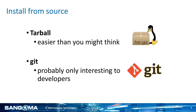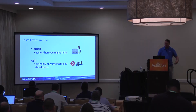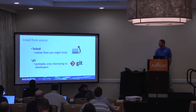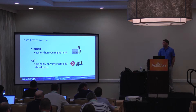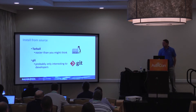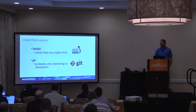To install from source, you can go out and grab a tarball off the Asterisk.org website. A tarball is essentially like a zip file in the Windows world — it's the way you compress everything together and then uncompress it. You could also use Git to get the latest and greatest from the Git repository, which is what the developers use for source code control. That's probably only interesting to developers, but there's no reason you can't do it.